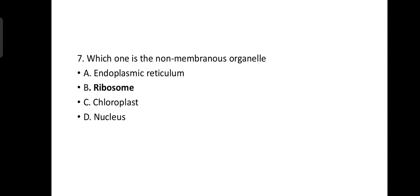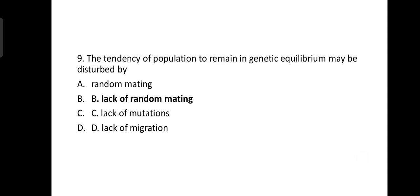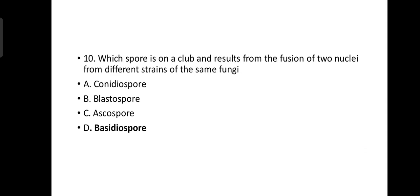Number eight: The crossing of F1 to any one of the parents is known as backcross. This helps in testing the homozygosity. The tendency of population to remain in genetic equilibrium may be disturbed by lack of random mating.